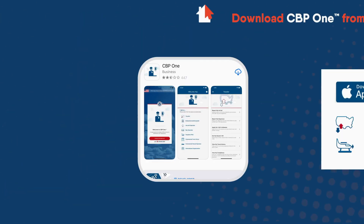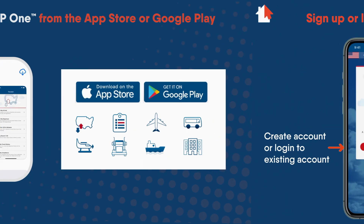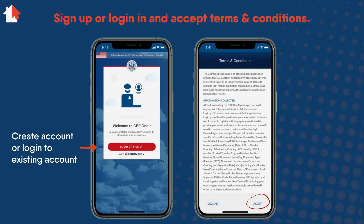To get started, download the CBP One app from the App Store or Google Play. The app is free. The app will redirect you to login.gov, where you can create an account or log into an existing account. You will also receive a confirmation email after creating your account.